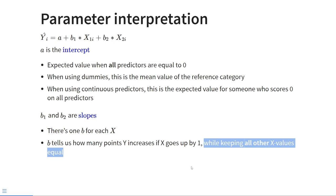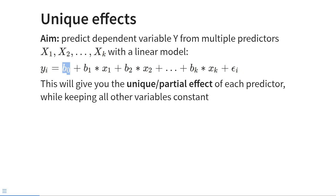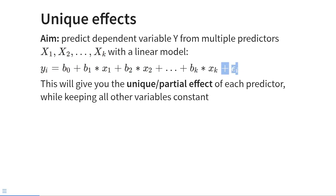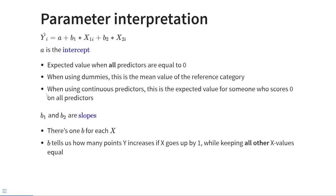So the goal of multiple regression is to predict one dependent variable y from multiple predictors x1, x2, until xk with a linear model. The individual values of y are equal to some intercept, often called b sub 0 in multiple regression, plus b sub 1 times x1, plus b sub 2 times x2, and so on until b sub k times x sub k, plus the individual prediction errors epsilon sub i. This regression equation gives us the unique — also known as the partial — effect of each predictor, while keeping all other variables constant. B tells us how many points y increases if x goes up by one, while keeping all other x values equal.